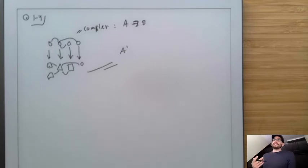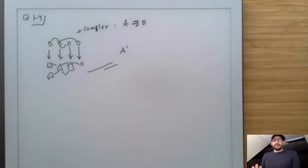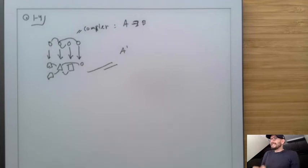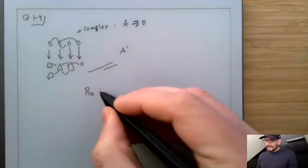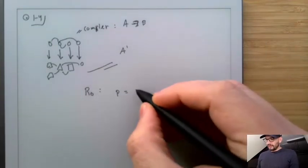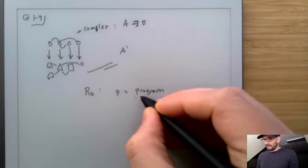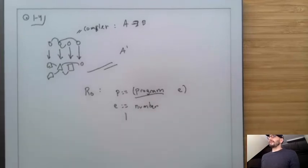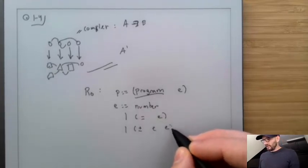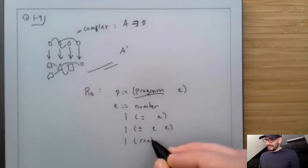What are the different components? The fundamental thing we're going to start with is defining the language we're going to compile. We'll call our language R0. A program P is equal to the word 'program' and then an expression E. An expression E is either a number, a unary negation, an addition of two expressions, or a call to the read function.